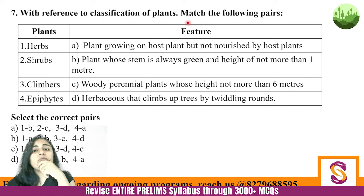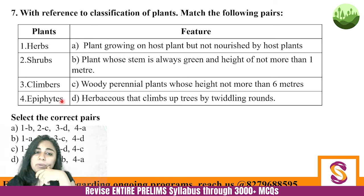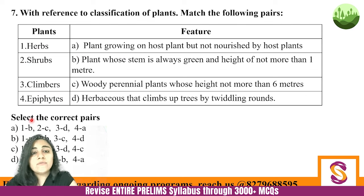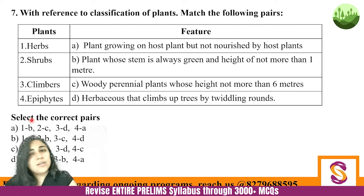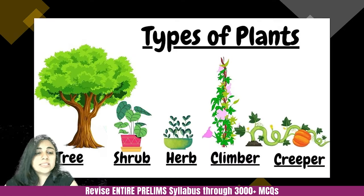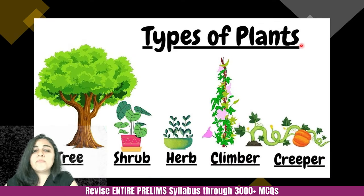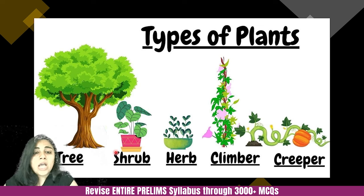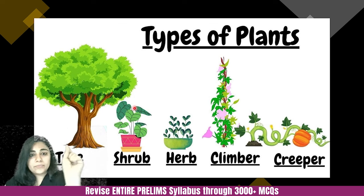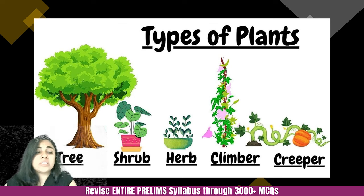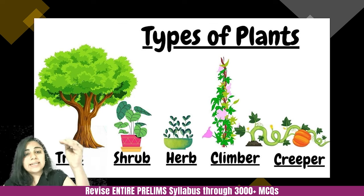Next question: With reference to classification of plants, match the following pairs — Herbs, Shrubs, Climbers, and Epiphytes. These are types of plants. Trees we all know. Shrubs are smaller than trees but do have a woody stem — you can call them medium-sized. Their most important distinctive characteristic is that they are woody. Herbs are not woody — whenever you say herbs, you see soft stems. Herbs are those kind of plants whose stems are always green; they do not have any wood.